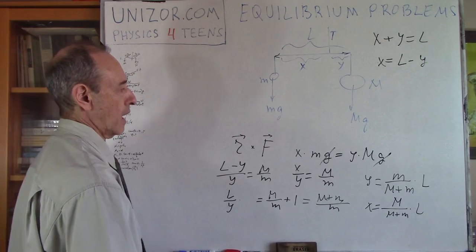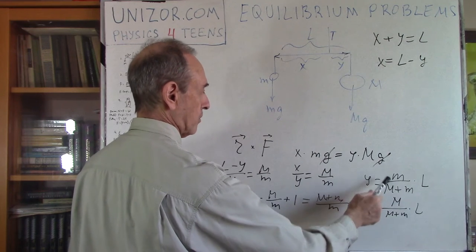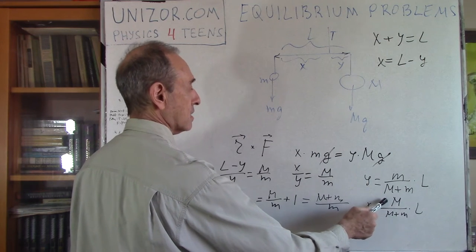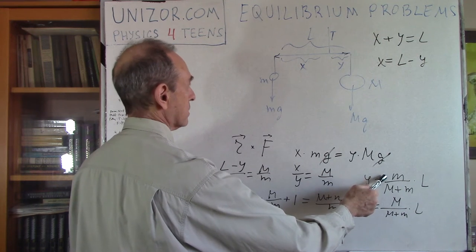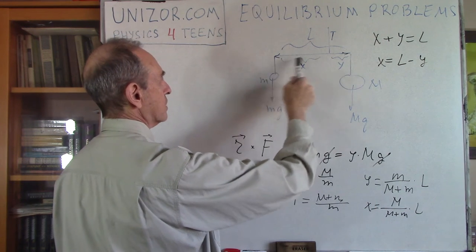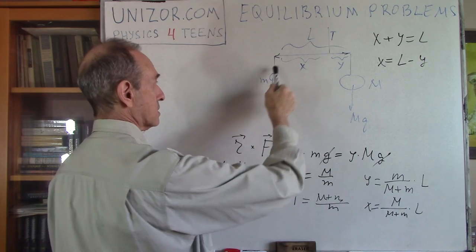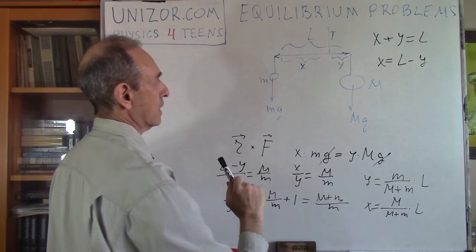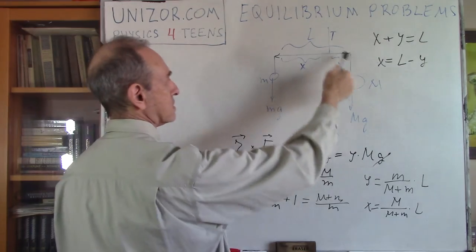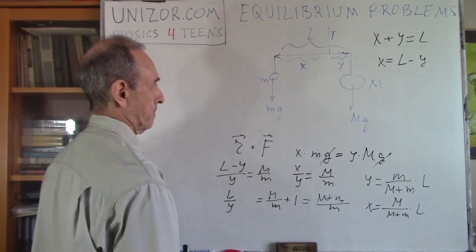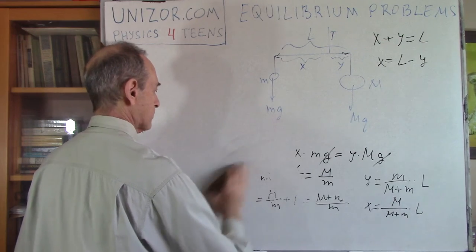Obviously, if capital M is greater than lowercase m, then x is greater than y, and that's how it's supposed to be. The lesser weight requires a greater radius to equalize the moment with the heavier side. That's it for the first problem.